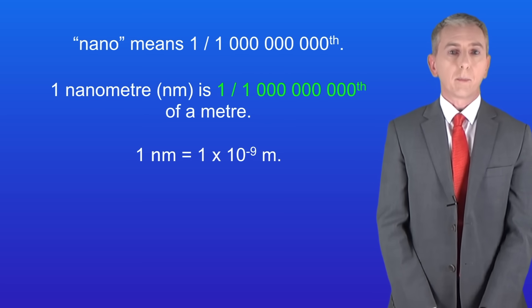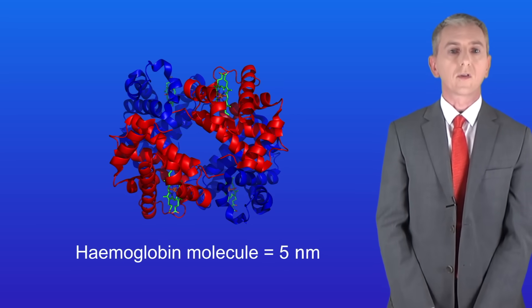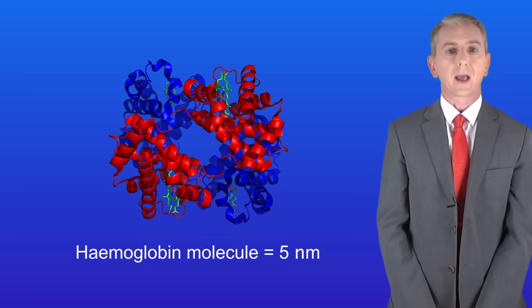Proteins in cells are measured using nanometers. This shows the protein hemoglobin which is found in red blood cells. A molecule of hemoglobin is around five nanometers in diameter.